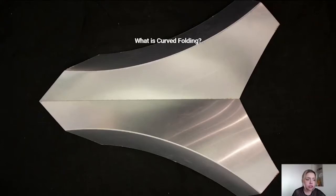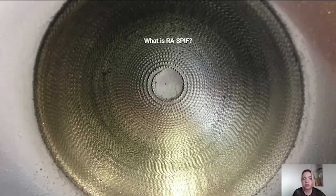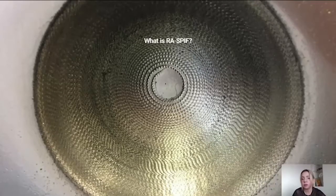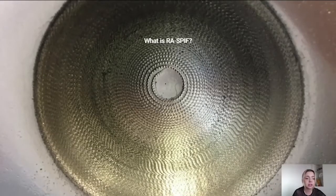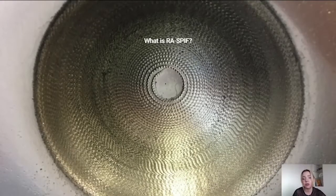So just to give a brief introduction, what is curved folding? It's a highly efficient fabrication method for manufacturing curved surfaces from flat sheet material without stretching, tearing or cutting. And RASPF stands for robotically aided single point incremental forming, or incremental sheet forming. Incremental sheet forming is a traditional sheet forming technique for inducing plastic deformation on sheet material and we can automate this process through the use of robotics.